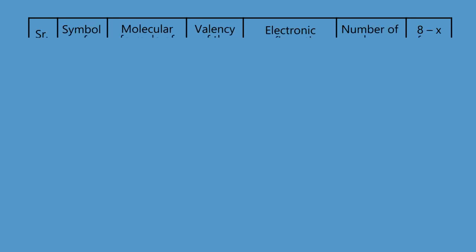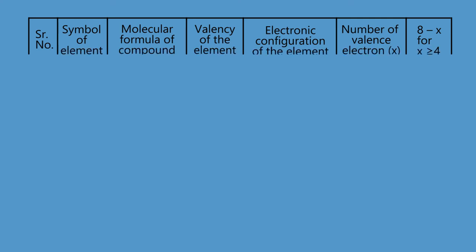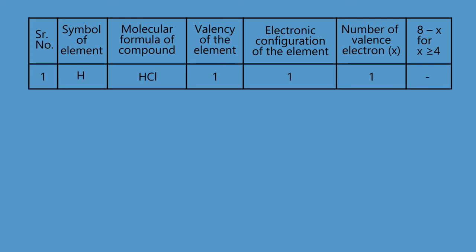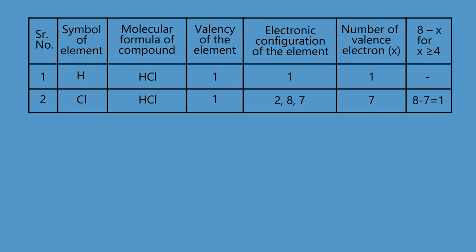Let us determine valency of certain elements forming compounds with hydrogen. In the compound HCl, hydrogen has valency 1 and electronic configuration 1 — it contains 1 valence electron. In the compound HCl, chlorine has valency 1 and electronic configuration 2,8,7 — it contains 7 valence electrons. Therefore, its valency is 8−7 = 1. Hence, valency of chlorine is 1.